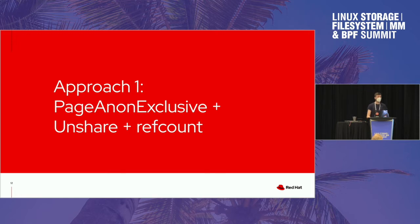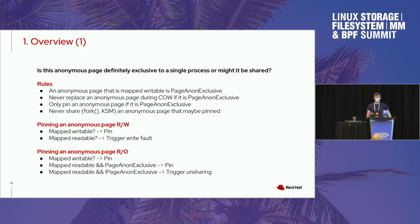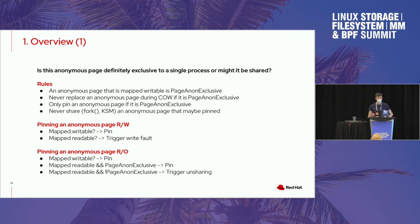The approach I'm upstreaming right now — and I want to raise awareness so more people can review the code — is something called PageAnonExclusive paired with unsharing and paired with the ref count logic. Our copy-on-write handler will still rely on the ref count, but we tweak it so it doesn't end up in cases where we really shouldn't copy-on-write. At the same time, we try to mitigate the performance issues we've been seeing. PageAnonExclusive is a page flag that expresses: is this anonymous page exclusive to a single process, or might it be shared? If it might be shared it could or could not be exclusive — we don't know. But once we see that flag set, it means this is really an exclusive page.